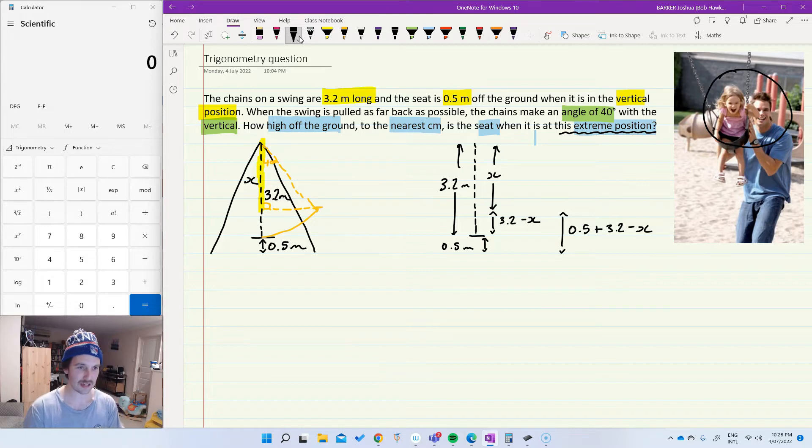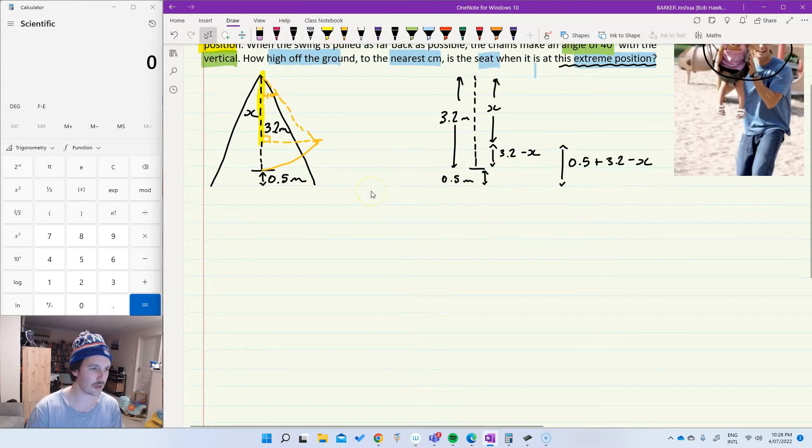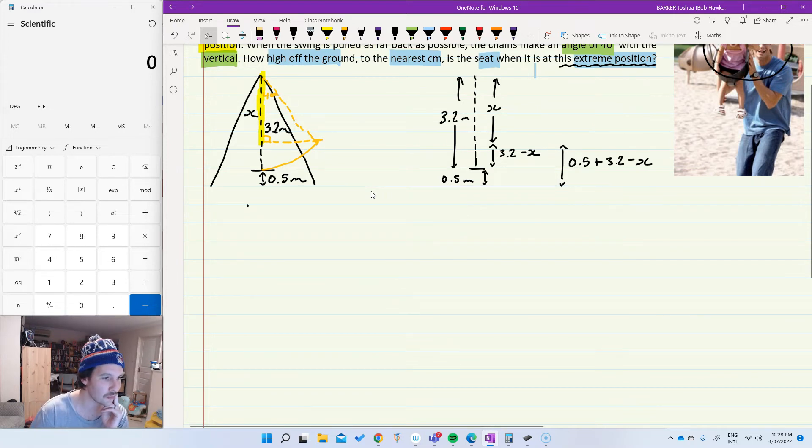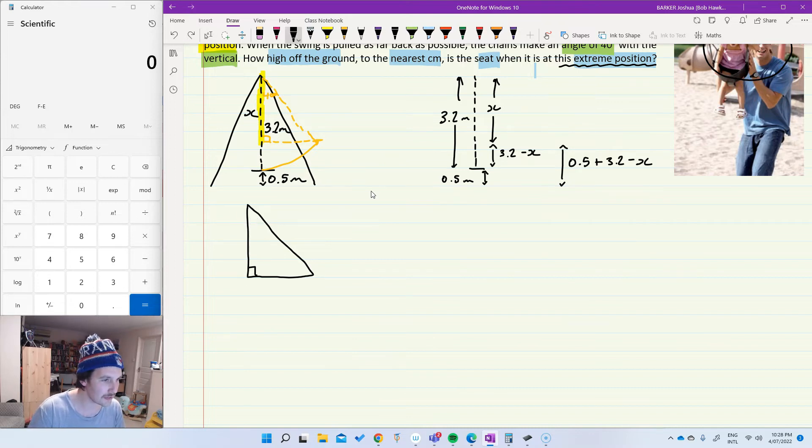Okay. So now it's turned into a pretty straightforward trigonometry problem. So I'm going to redraw my right angle triangle like this. I'm going to put in all the bits of information that I either have or I'm interested in finding. I can do a better 40 than that. 40 degrees. I'm going to find X. I've got a hypotenuse length of 3.2 meters.